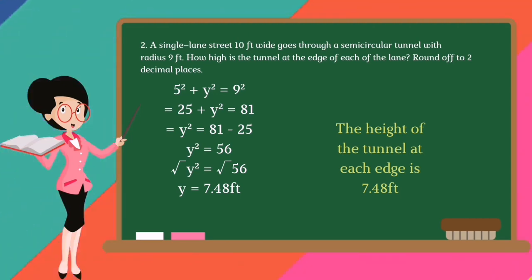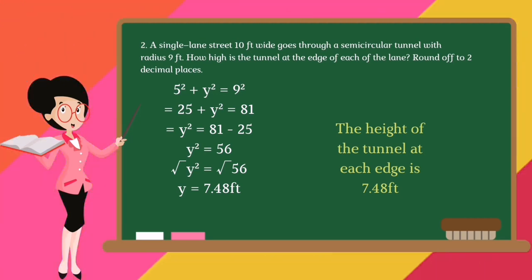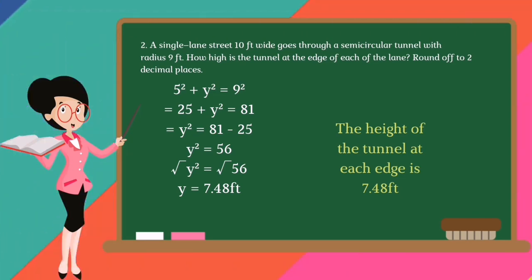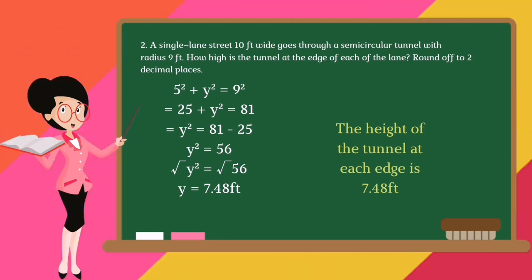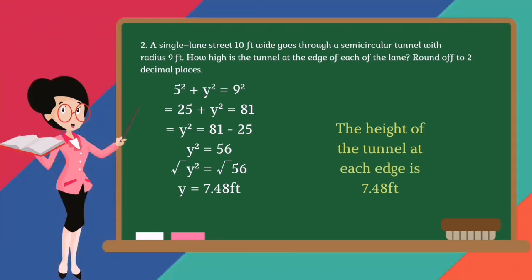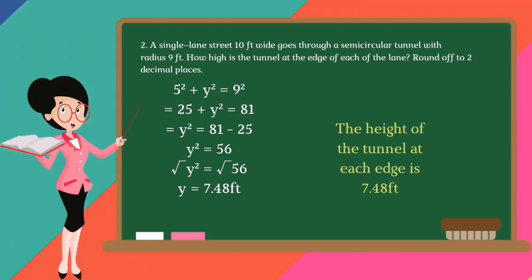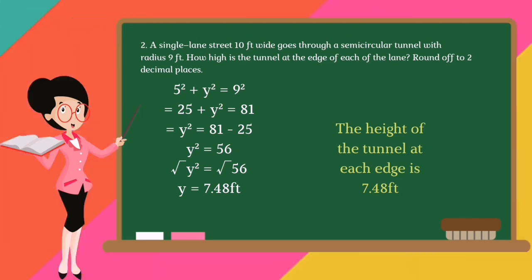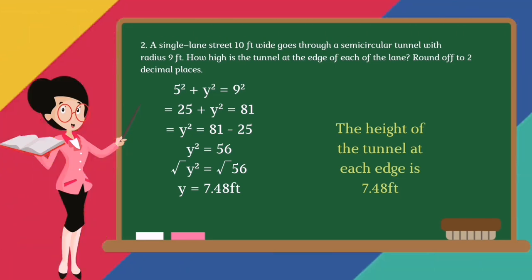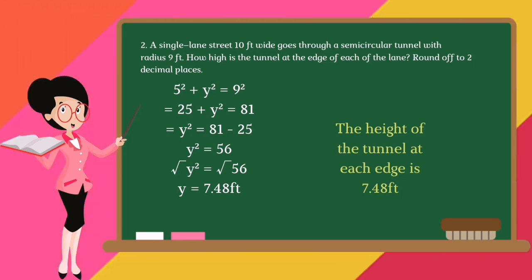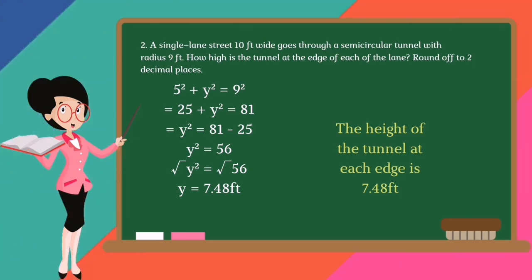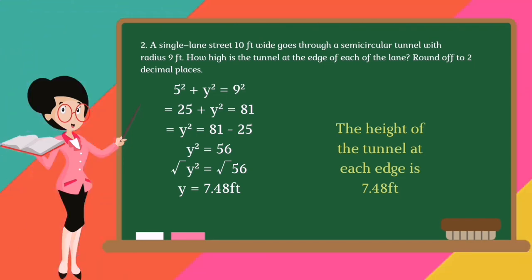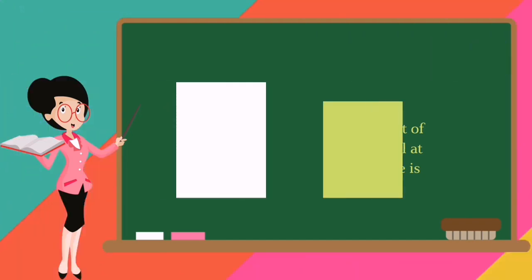Lastly, let us solve for y to get the height of the tunnel. 5² + y² = 9². Let us solve the squares: 25 + y² = 81. Now transpose 25 to the right side: y² = 81 - 25, so y² = 56. Let us put a square root on both sides to cancel the exponent for y: y = √56. So our final answer is 7.48 feet. Therefore, the height of the tunnel at each edge is 7.48 feet.